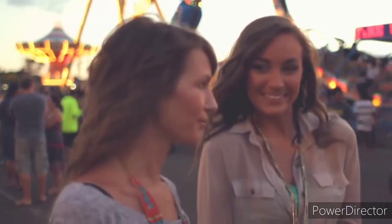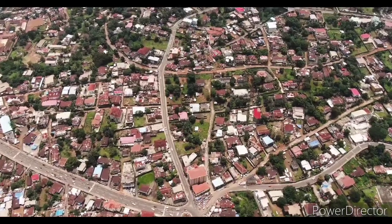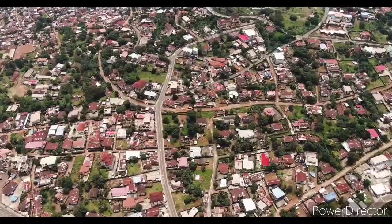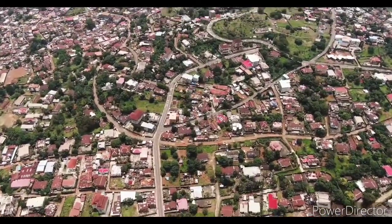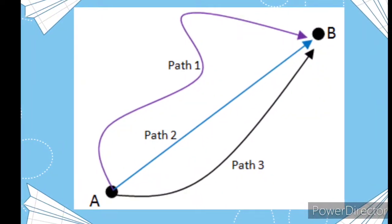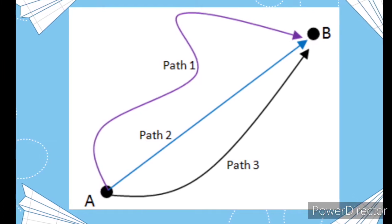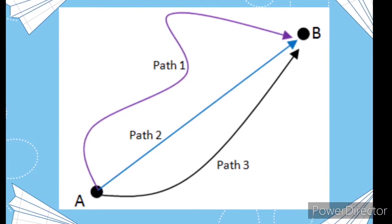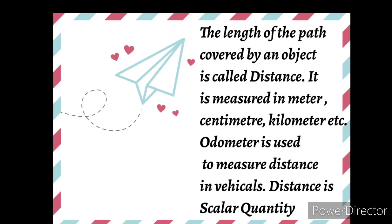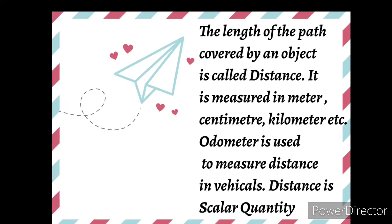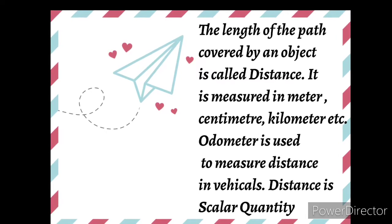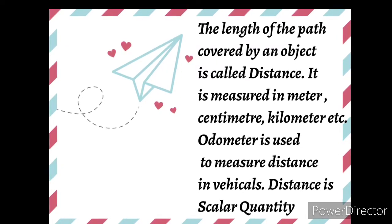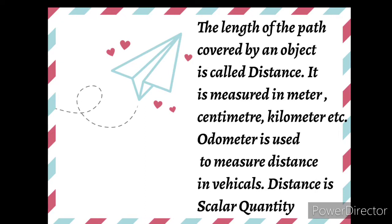Suppose you are at your home A and want to go to your friend's house B. There are many routes by which you can go to his house. You can choose various paths — the first path is the longest, the third is moderate, and the second is the shortest. The length of the path covered by you from your house to your friend's house is called distance. Hence, distance can be defined as the length of the path covered by an object.